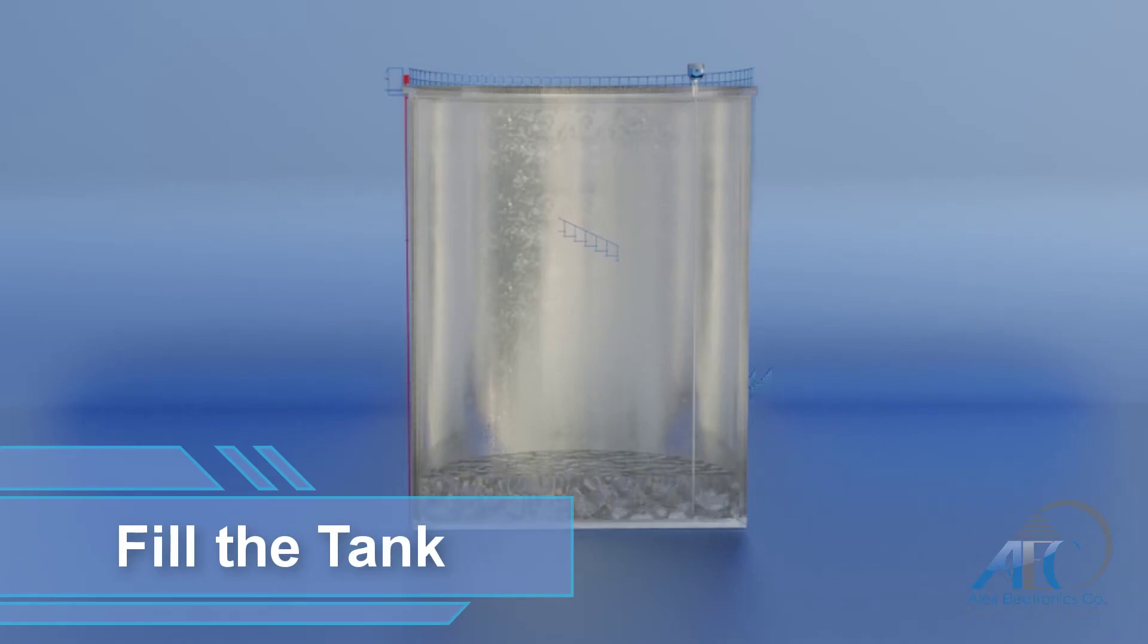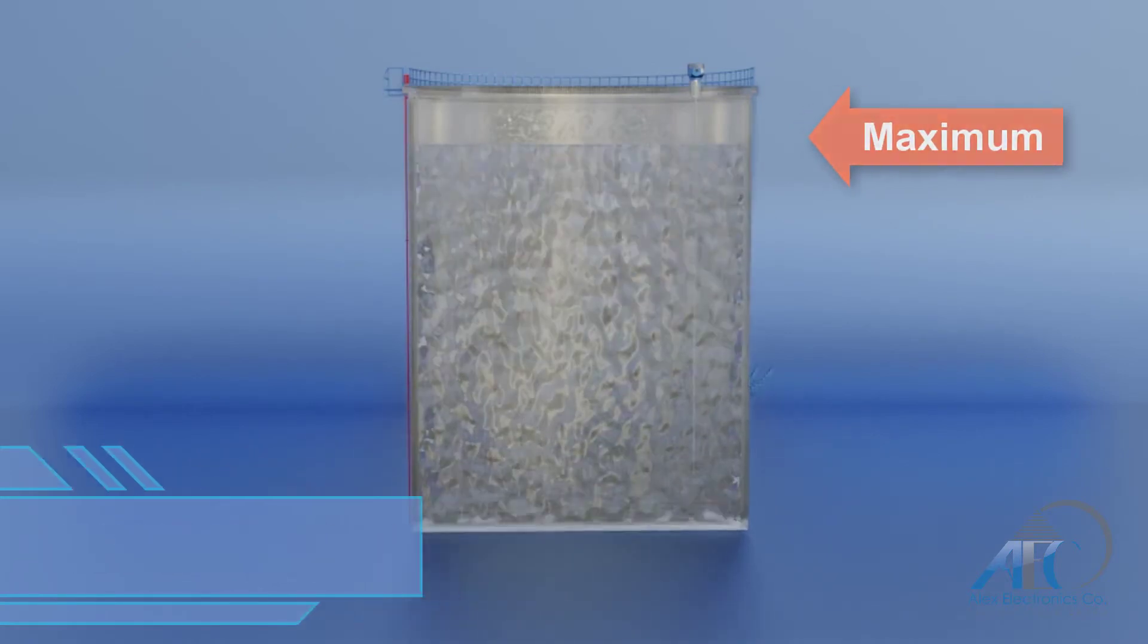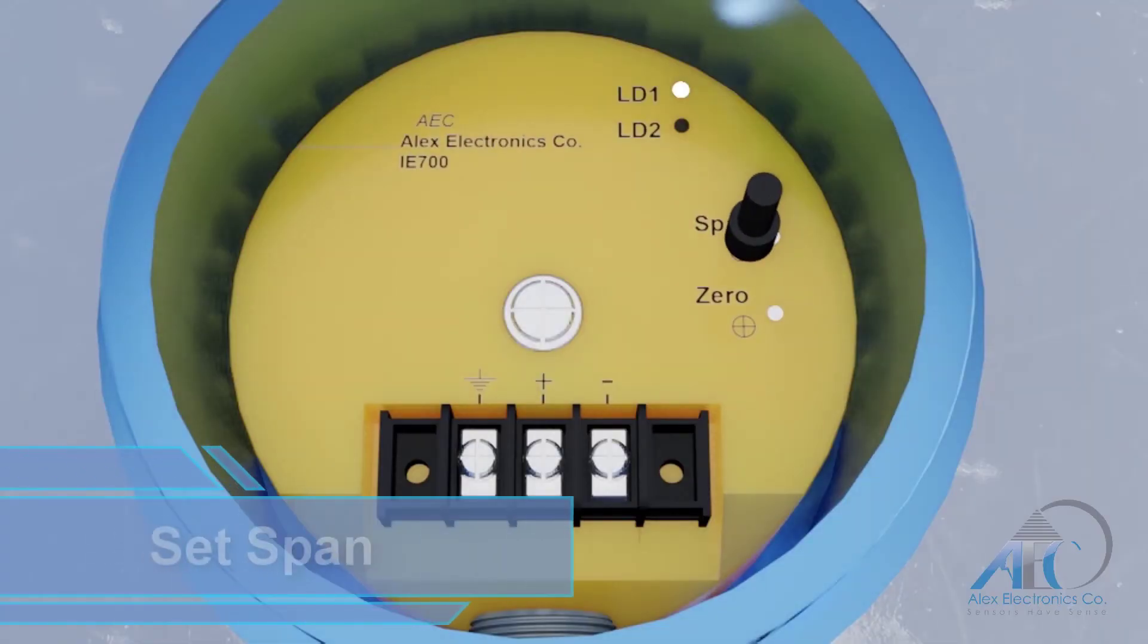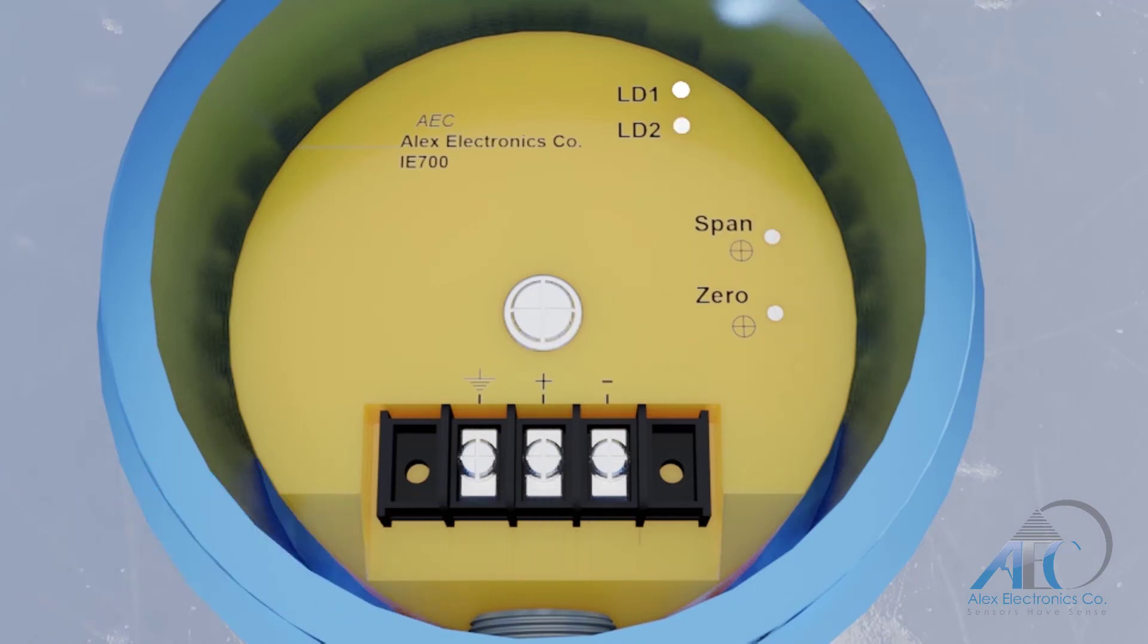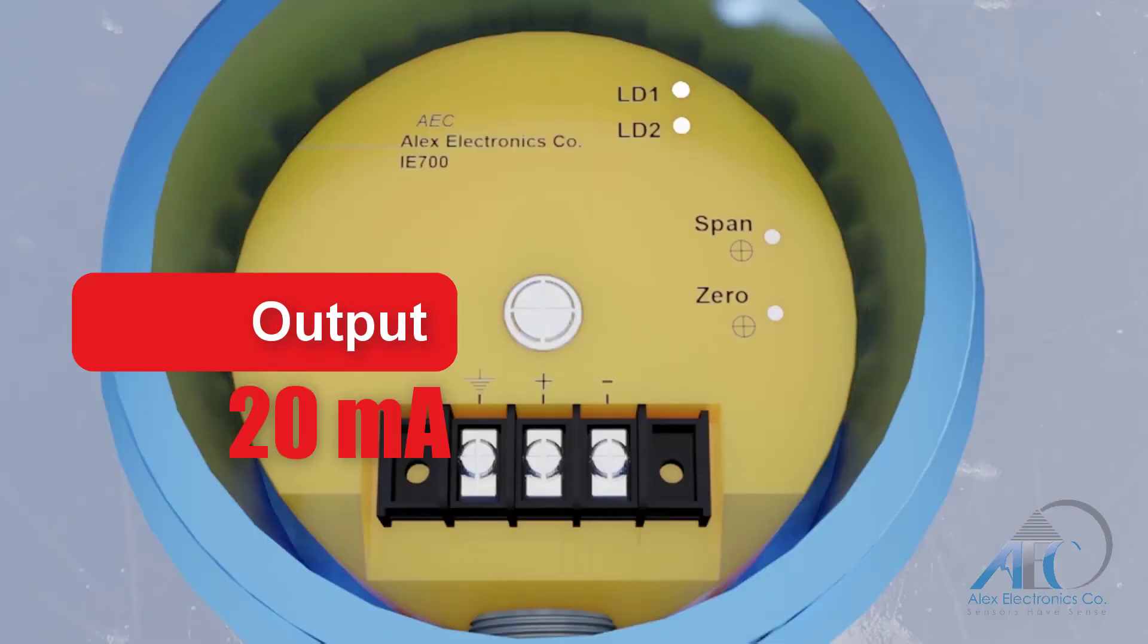To set the span, you need first to fill the tank to its maximum level. Then use the magnetic pen with the span programming circle in the same way as shown previously. At this point the output signal is 20 milliampere.